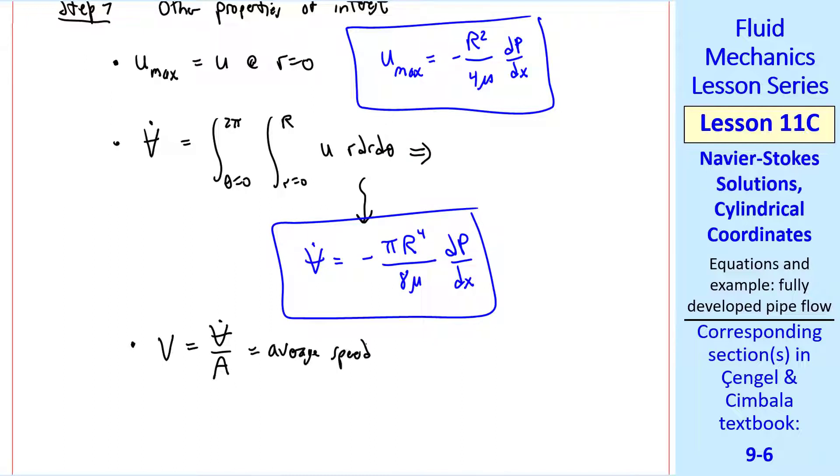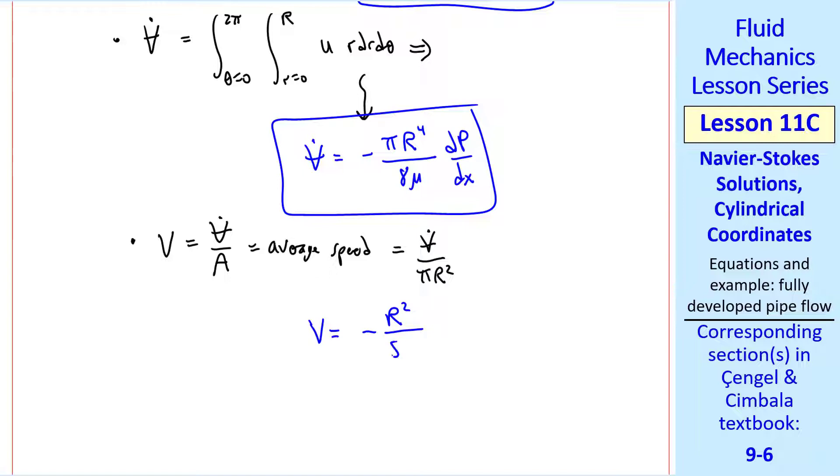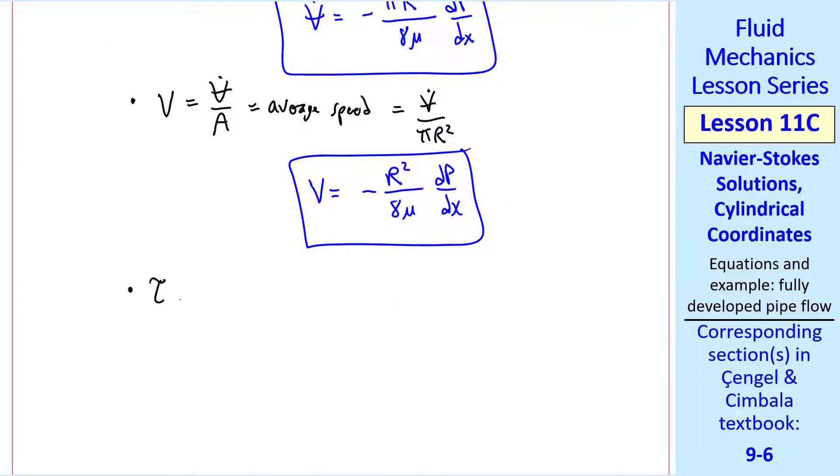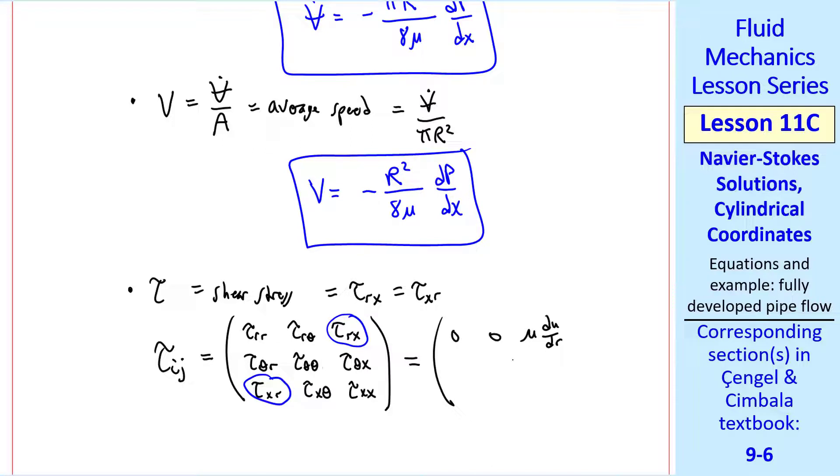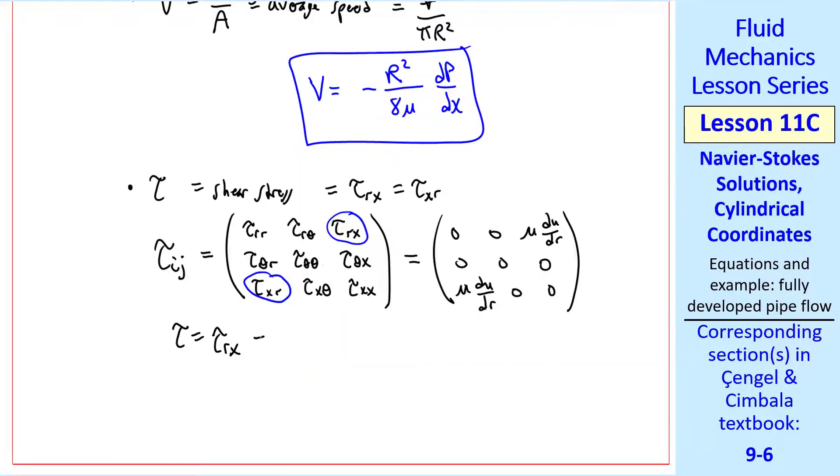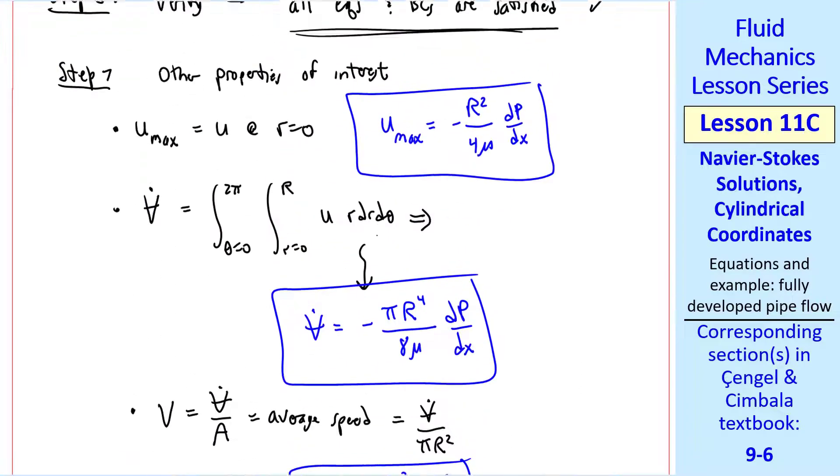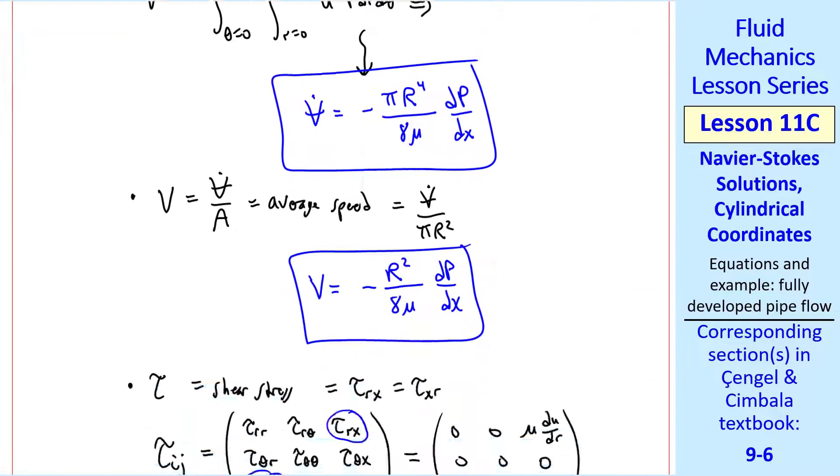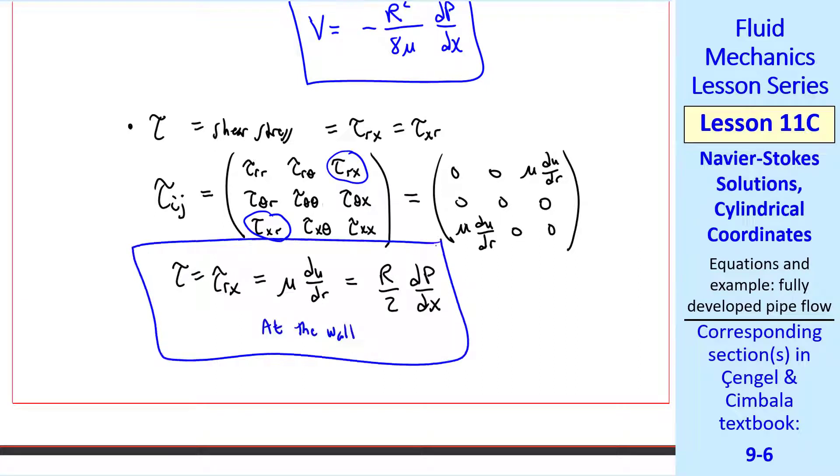And we can calculate the average speed, which is what we always use for calculation of Reynolds number. We just take V̇ and divide by πR². So average speed is negative R² over 8μ dp/dx. Finally, let's calculate the shear stress τ, which is actually τrx, which equals τxr. It turns out that the deviatoric stress tensor in cylindrical coordinates is written with these nine components in the r theta x coordinate system. But with all our assumptions and approximations, all of these go to zero, except these two. And those two are μ du/dr, since this tensor is symmetric. So the shear stress is μ du/dr, which we can get by taking the derivative of our velocity profile. And when we do the math, it simplifies to r/2 dp/dx at the wall. From here, you can calculate the Darcy friction factor f as a function of Reynolds number. If you do it right, you should get our old friend f equals 64 over Reynolds number.